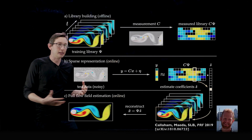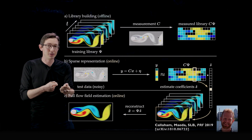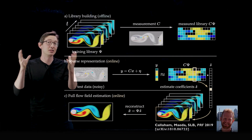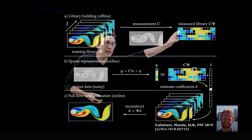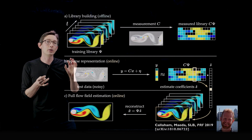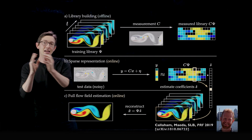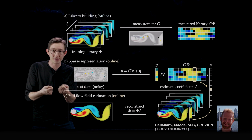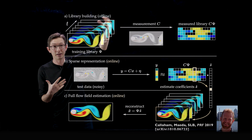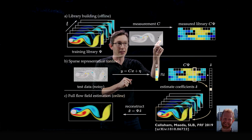More recently, Jared Callaham, Kazuki Maeda, and I applied this to a wider variety of flows — studying what types of measurements and noise levels you can get away with, doing an exhaustive study of how this scales to more complex fluid flow problems. Here we're using sparse representation not just for classification but for full flow field reconstruction — not just 'is it flow A or flow B' but getting all the subtle details of the fluid flow.